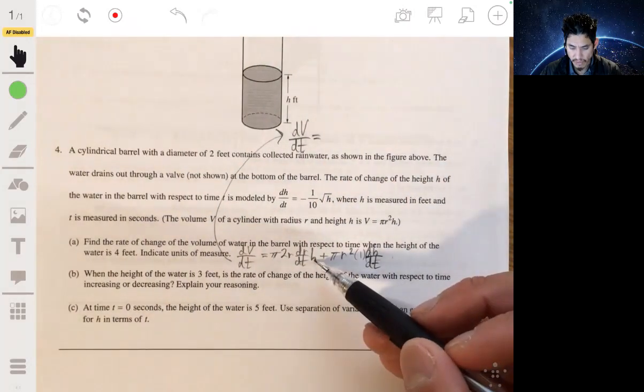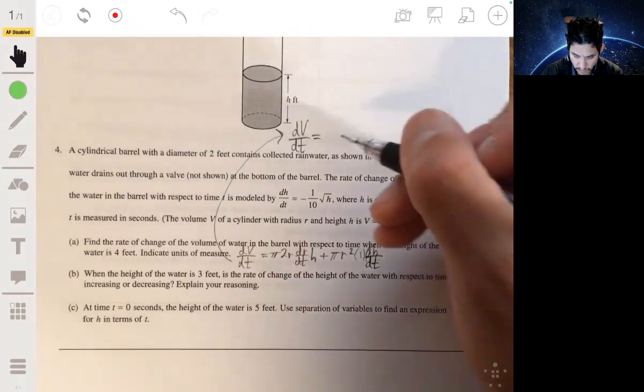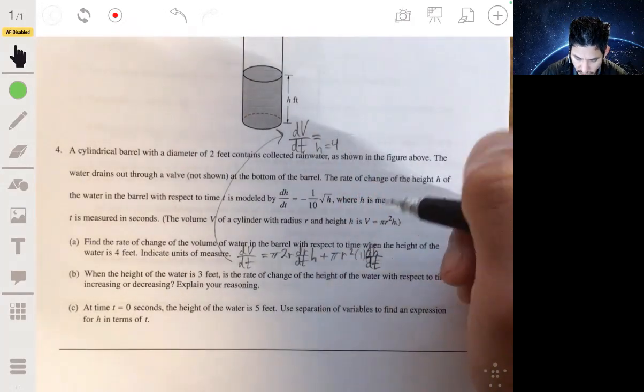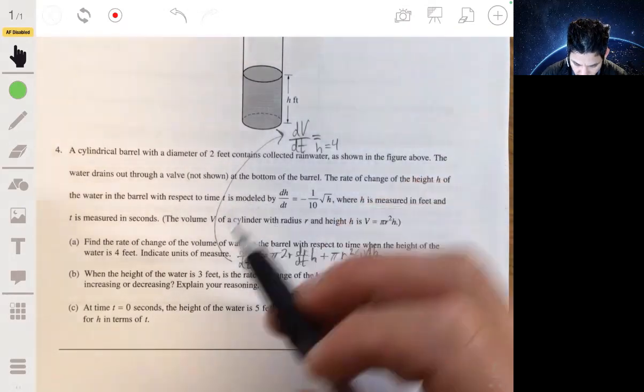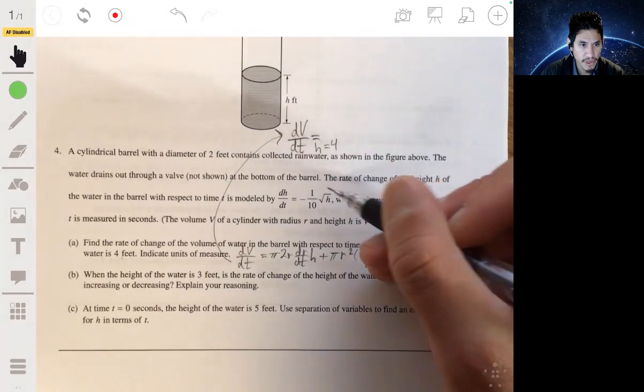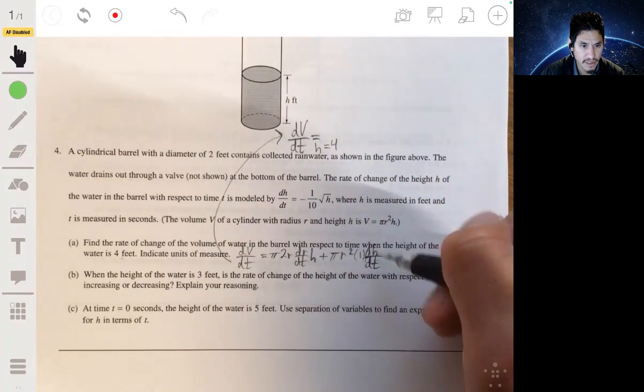So here's the thing, when you plug in h for the height, by that I mean when you plug in four for the height, you know, you already know what dh/dt is, you plug that in here obviously, but you're like, well, what is r?